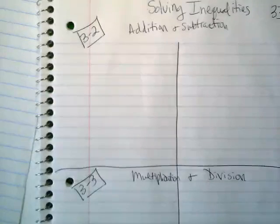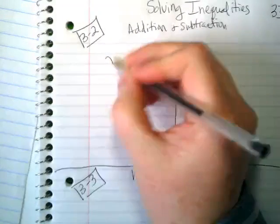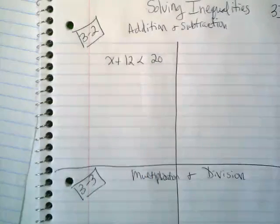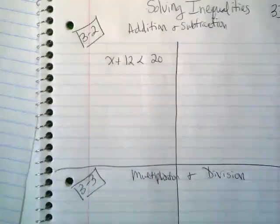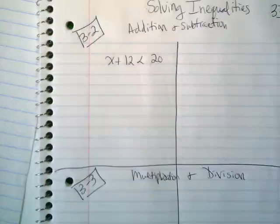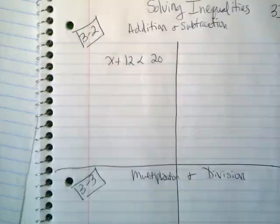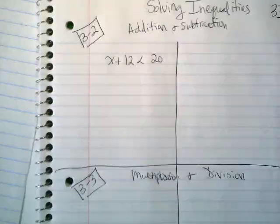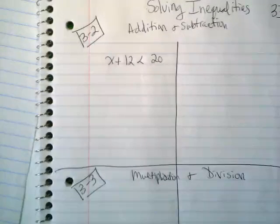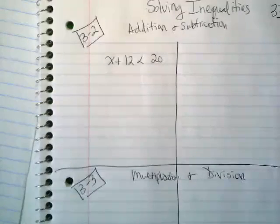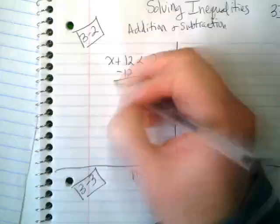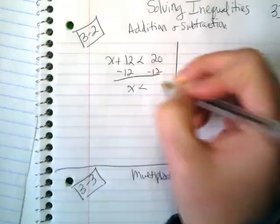We are going to start with x plus 12 is less than 20. The only difference between the kind of work we've been doing before and now is instead of an equal sign, we have an inequality symbol. All the rules are still the same. I see addition, so I'm going to subtract 12. And I get x is less than 8.